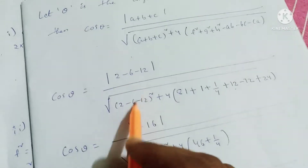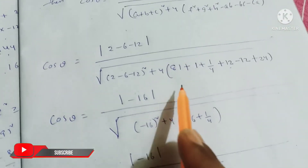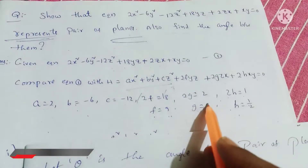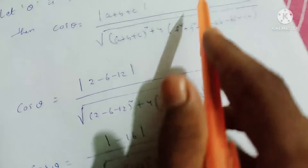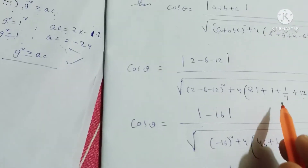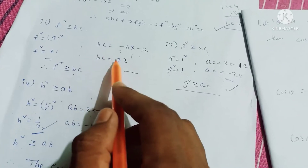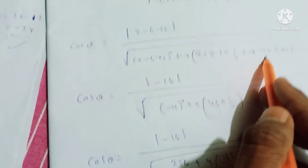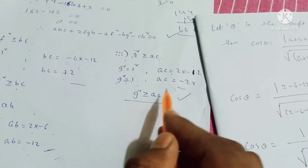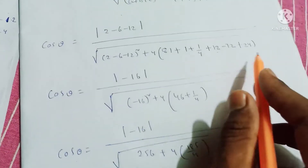Computing the denominator components: a plus b plus c whole squared gives the numerator value. f equals 9, f squared equals 81. g equals 1, g squared equals 1. h equals 1 by 2, h squared equals 1 by 4. Minus ab: ab equals minus 12, so minus ab equals plus 12. Minus bc: bc equals 72, so minus bc equals minus 72. Minus ca: ca equals minus 24, so minus ca equals plus 24.